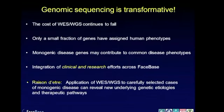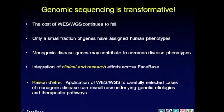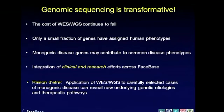Sequencing is transformative for biomedicine. The cost is plummeting steadily — a research exome is $400 — bringing all kinds of sequencing projects into the realm of possible. Only a small fraction of genes have assigned human phenotypes, so we're really interested in the functional annotation of the human genome. Monogenic disease genes can contribute to common disease phenotypes, exemplified by IRF6 and cleft palate. Most excitingly, it represents an integration of clinical medicine with research — real patients we're studying, with work going into the laboratory at a functional level. The raison d'être of our project is to apply whole exome, or increasingly whole genome, to carefully selected monogenic disease cases to look for genetic etiologies and insight for therapy.